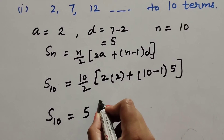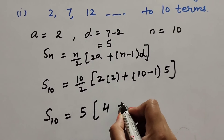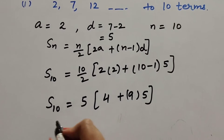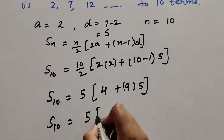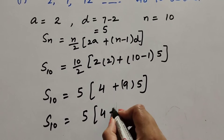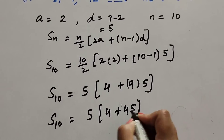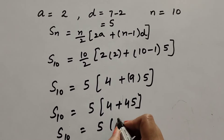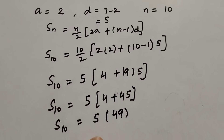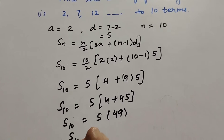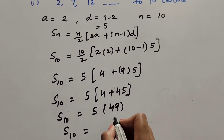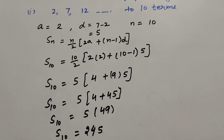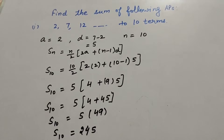10 divided by 2 gives 5. Then 2 × 2 = 4, and (10−1) × 5 = 9 × 5 = 45. So S₁₀ = 5 × (4 + 45) = 5 × 49 = 245. The sum of 10 terms of the given AP is 245.